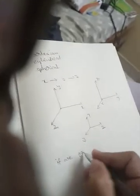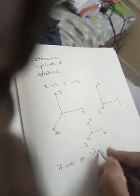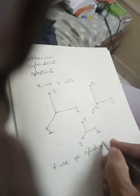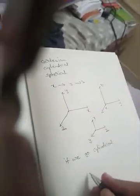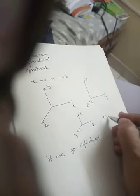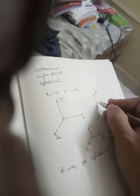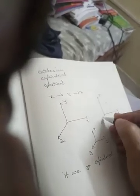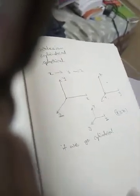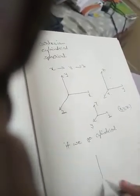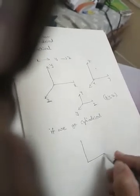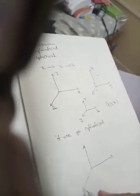Now if we go for cylindrical, in this the point is X, Y, Z. Suppose somewhere here a point is there, the distance from X and Y you will get X, Y, Z. In cylindrical coordinates...